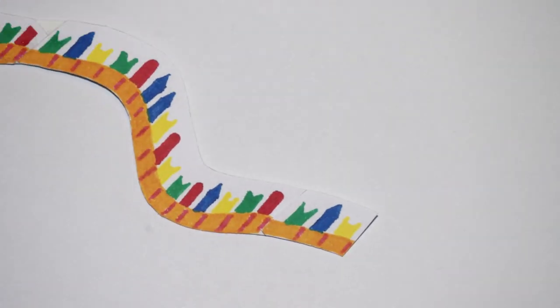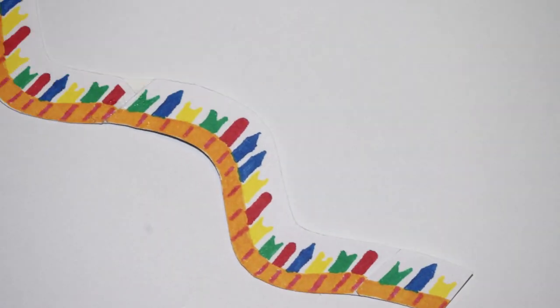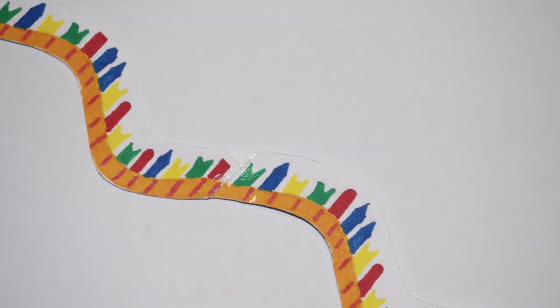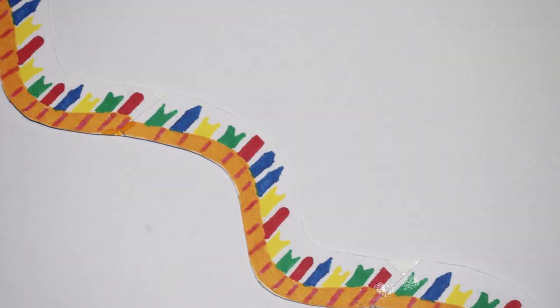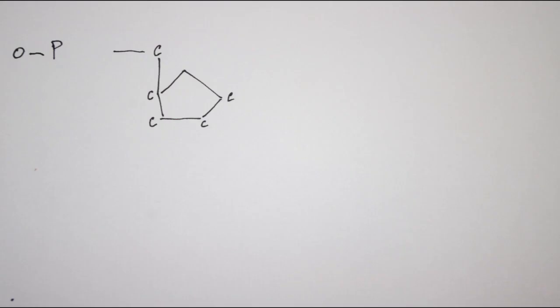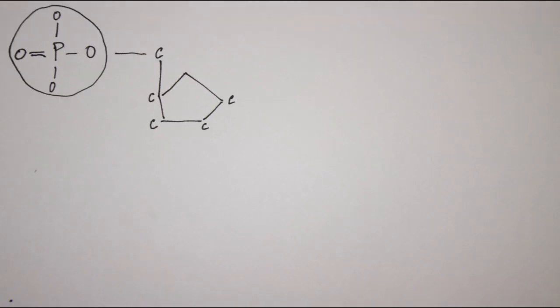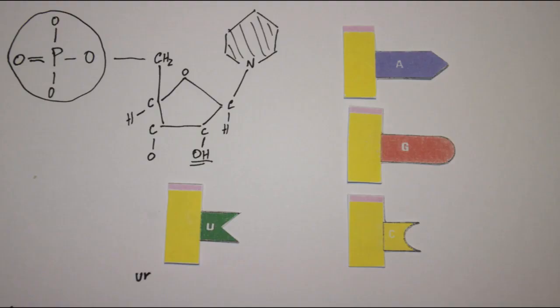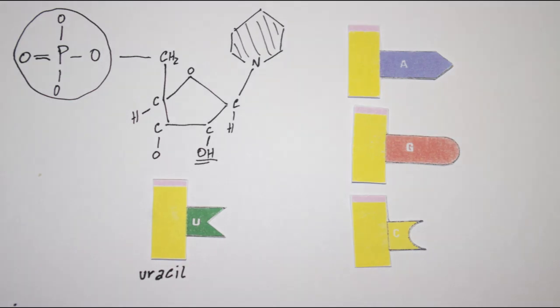Ribonucleic acid, the RNA, is the other nucleic acid existent in living organisms. It's a kind of younger brother to DNA, with a very similar chemical composition, but less stable and just single-stranded. As in DNA, there are four types of nucleotides — they are just the same, with one exception: instead of thymine, RNA has uracil.